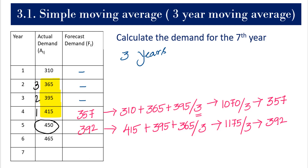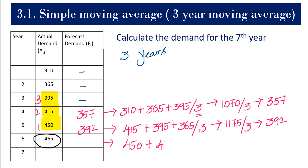Now for the sixth year, moving the window forward, we need three years of data: 415 plus 415 plus 395, divided by 3. This gives us 1260 divided by 3, and we get 420 units.